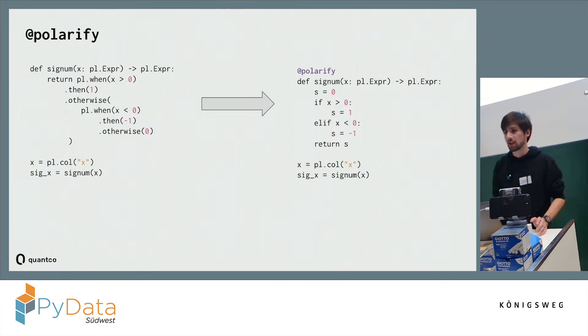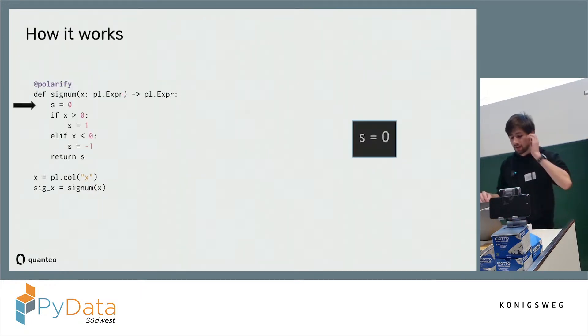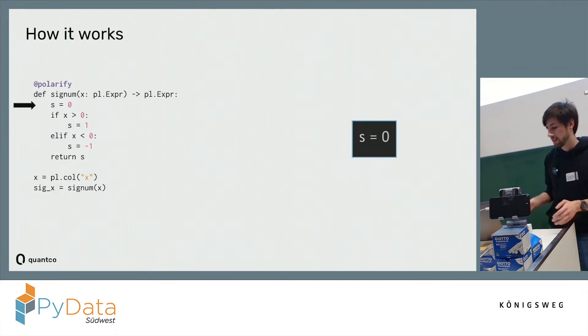Let's take a quick look at how Polarify does this. Polarify goes through your function body statement by statement and keeps track of all the assignments you have made along the way and what conditions it has encountered. We start off with this first statement, with S being just assigned 0.